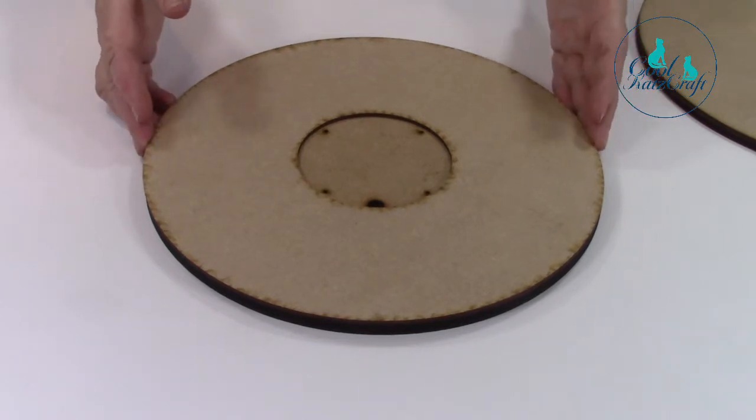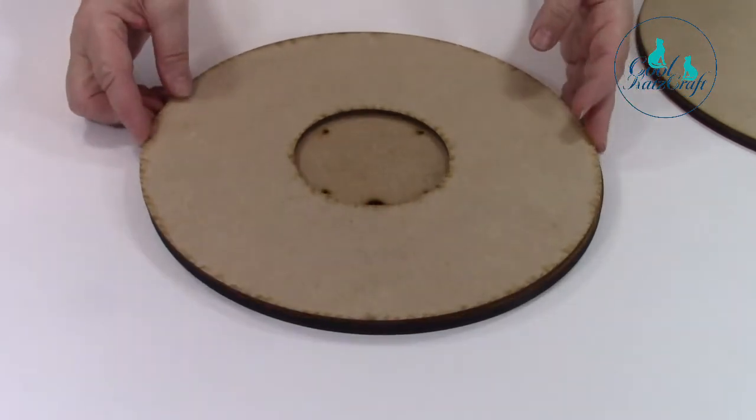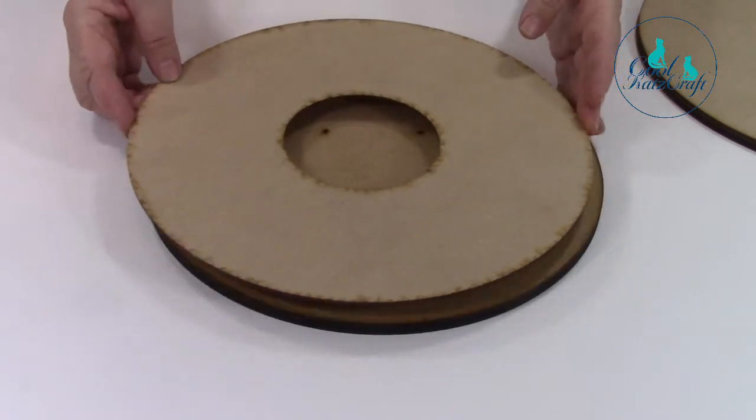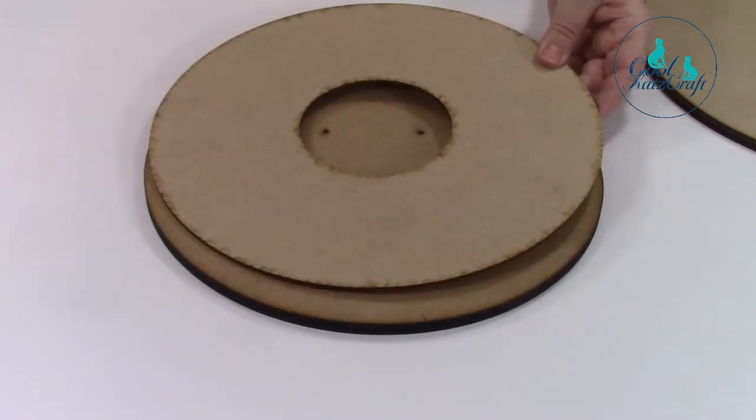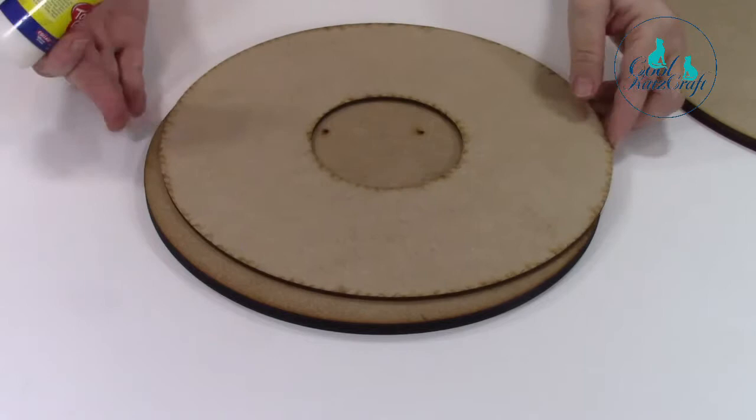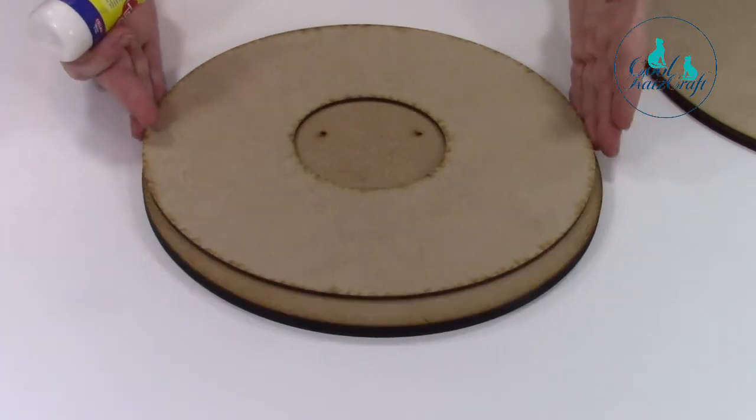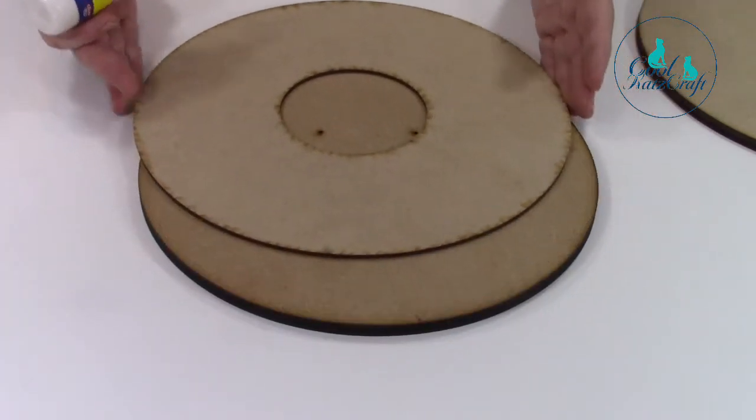So we're going to start with the base. You'll have four circular pieces, two doughnut sizes as in your instructions, and we're going to start and just stick one on top of the other. Make sure you've got the corresponding doughnut that fits exactly to the wider piece.